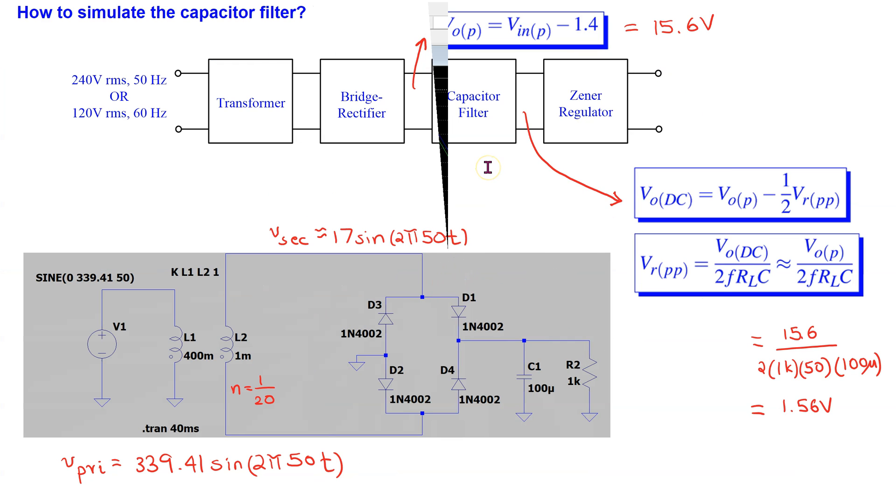The capacitor filter is simulated by adding a capacitor in parallel with the load resistor. The capacitor filter converts a pulsating DC input to a smoothed DC output with a ripple. The theory formulas needed to characterize the output of the capacitor filter are shown here.